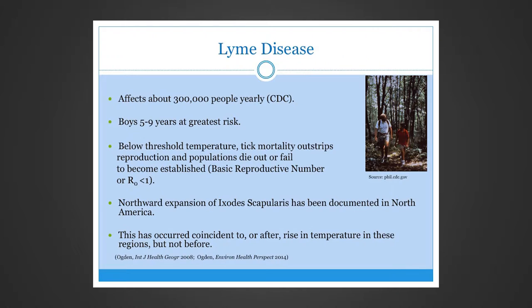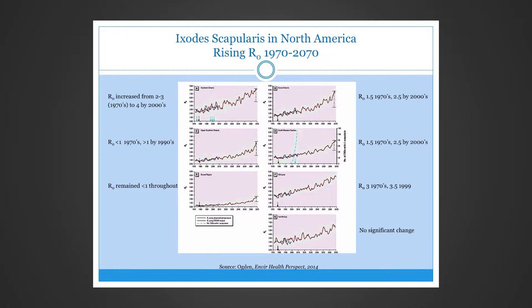Below a certain temperature threshold, tick mortality outstrips their reproduction, so populations die out and never become established — the basic reproductive number is less than one. Northward expansion of the Ixodes scapularis tick has been documented in North America after those areas became warmer. From 1970 to the present, the reproductive number has increased in four Canadian study regions and in Old Lyme, Connecticut, and further increases are projected with continued warming.